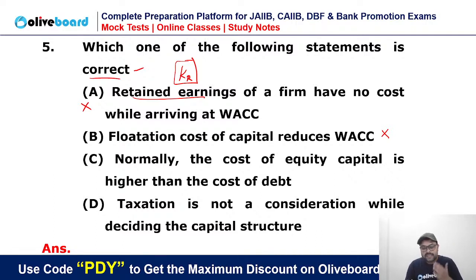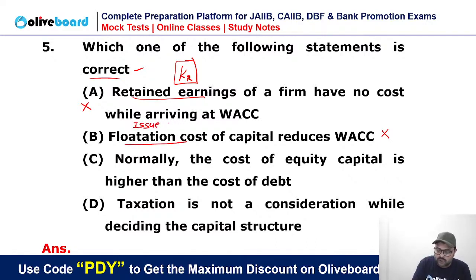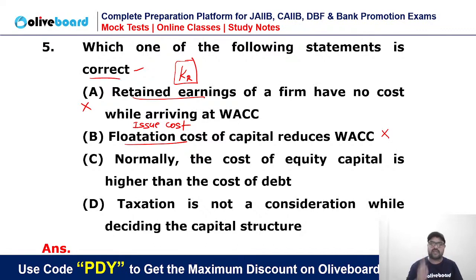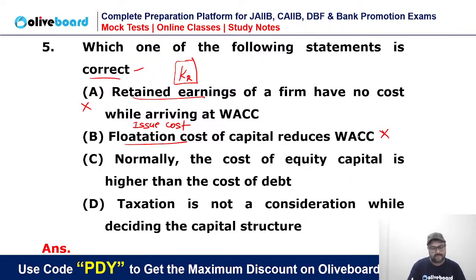Flotation cost of capital reduces weighted average cost of capital — this is completely wrong. Flotation cost is your expense. In simple terms, flotation cost is the issue cost involved in issuing equity, debentures, or preference shares in the market. To issue any such document in the market, you have to spend on prospectus, memorandum of association, and advertisements. So this statement is wrong — flotation cost increases WACC, it does not reduce it.